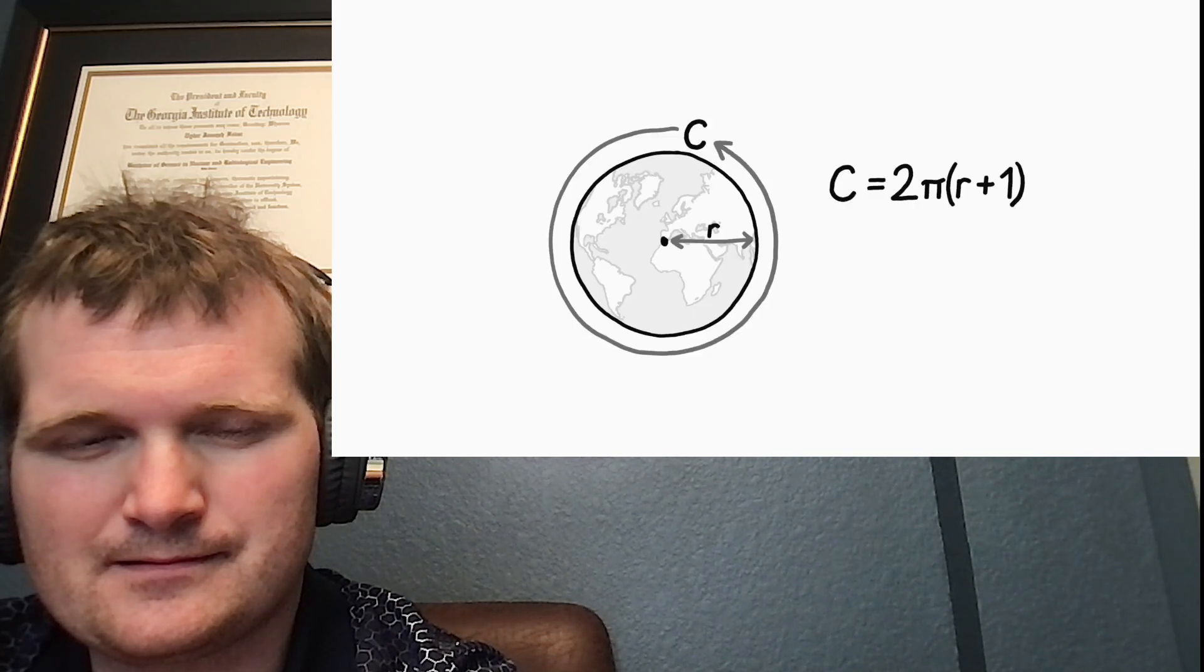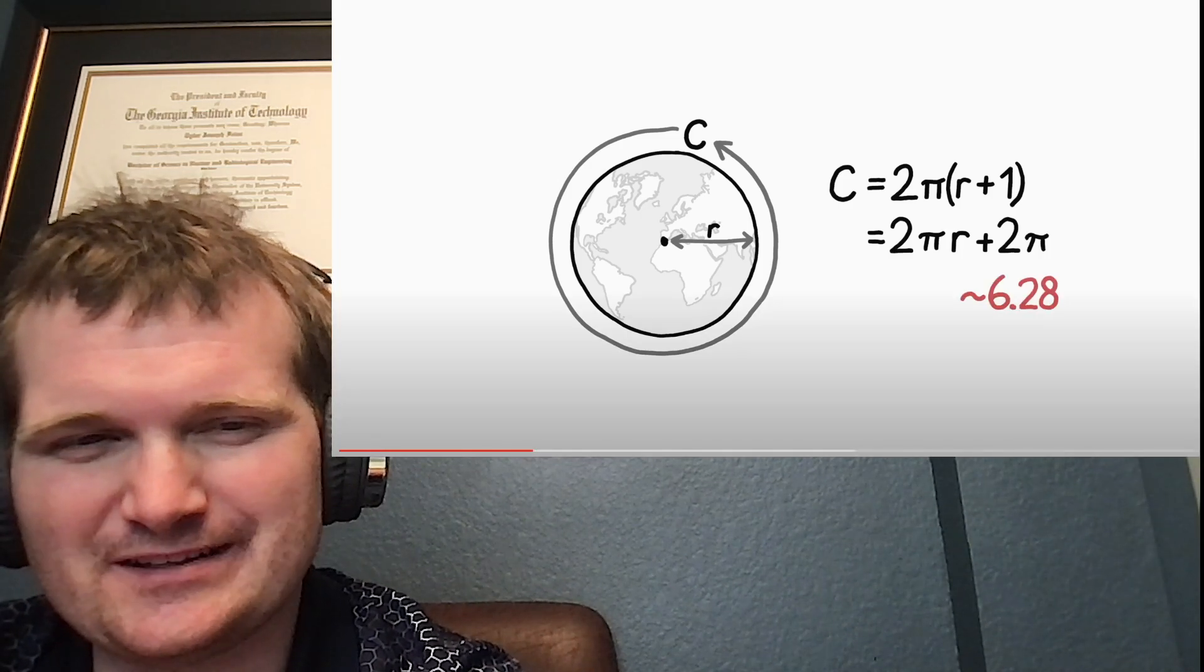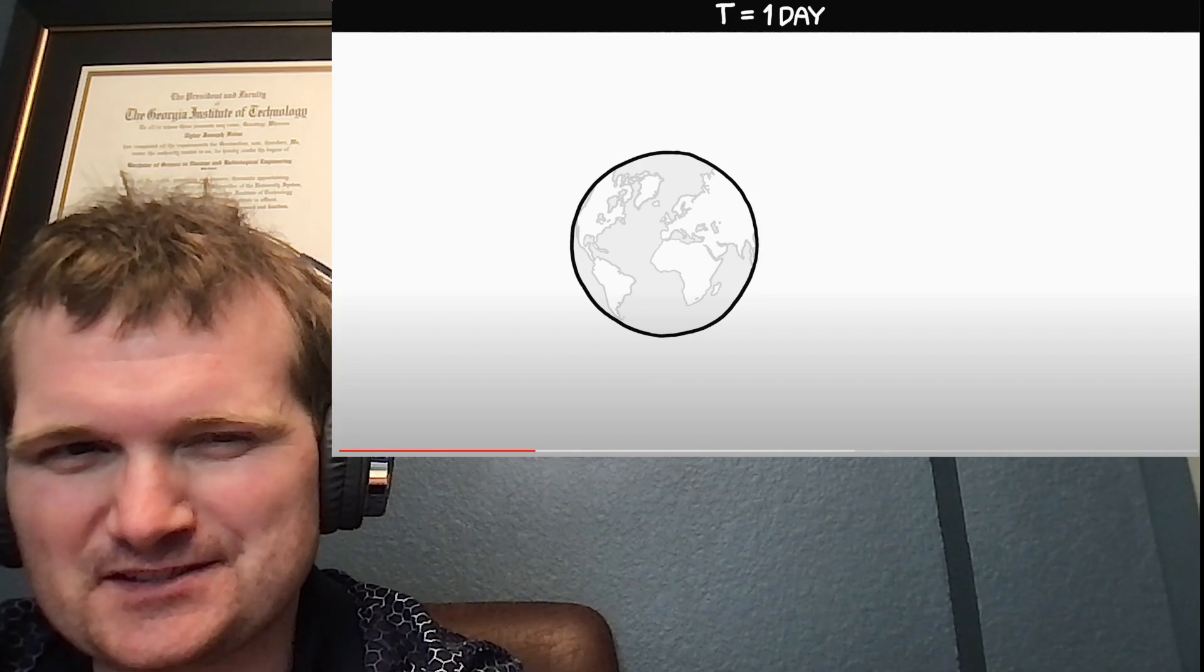The answer's about six meters. Circumference is proportional to radius, so if you increase the radius by one unit, you increase the circumference by two pi units. It's interesting how there's actually a simple solution to that. Granted, the Earth's not perfectly spherical.